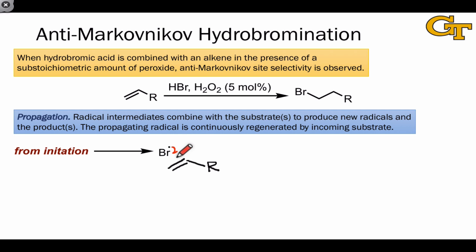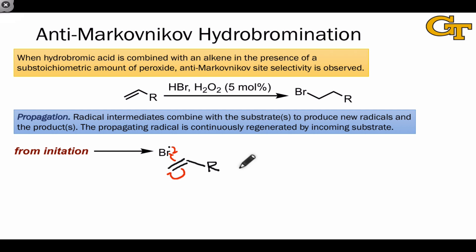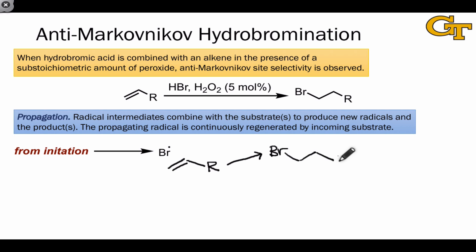Notice that this can happen in two different ways. Bromine can form a bond to the less substituted position, leaving radical character on the more substituted position, or bromine can form a bond to the more substituted position, leaving radical character on the less substituted position. Before drawing curved arrows, let's consider these two possibilities systematically. We know what the product is, but it's worth convincing ourselves why one pathway is favored over the other.